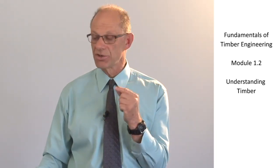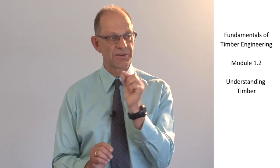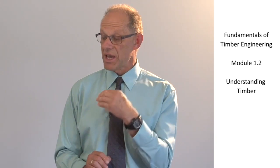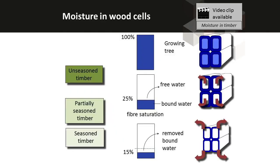Now those cells in a growing tree are full of moisture so that there is water in all of the cell voids and all of the cell walls are pumped up with water as well. In terms of production we remove as much moisture as we possibly can out of the tree as part of the production process. And we wind up with hollow voids in the center of the cells and the cell walls have reduced in thickness as we have taken some of the moisture out. We tend to target around 15% moisture content and we call timber that has been dried to 15% seasoned timber. That's the main source of structural timber - most of our structural timber products are seasoned.